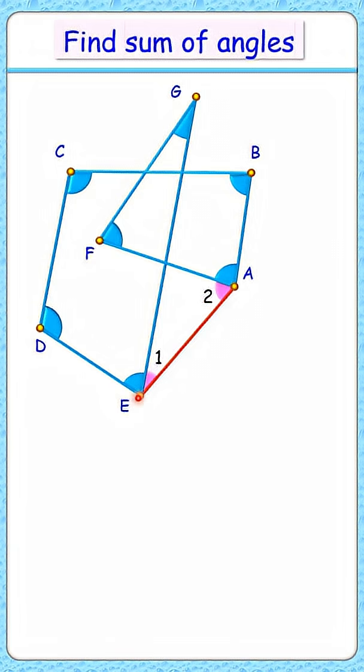Now if you look carefully, EABCD is a pentagon and sum of all angles of a pentagon, that is A plus 2 plus B plus C plus D plus E plus 1, so sum of all 5 angles of pentagon is 540 degrees.